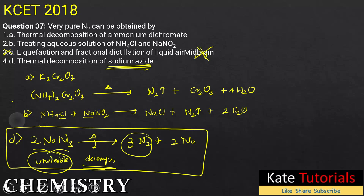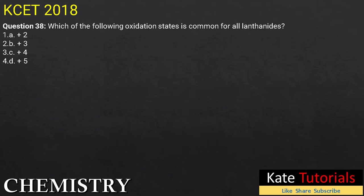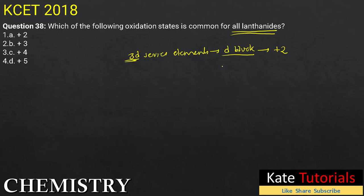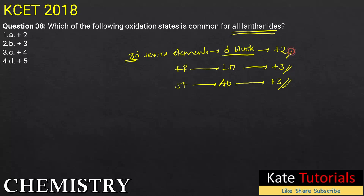Coming to question number 38: which oxidation state is common for all lanthanoids? You should know that for 3d series elements (d-block elements), the common oxidation state is +2. For lanthanoids, which are f-block elements — specifically 4f block — the common oxidation state is +3. Similarly, actinoids, which have 5f orbitals, also have +3 as the common oxidation state. So the common oxidation state of lanthanoids is +3.